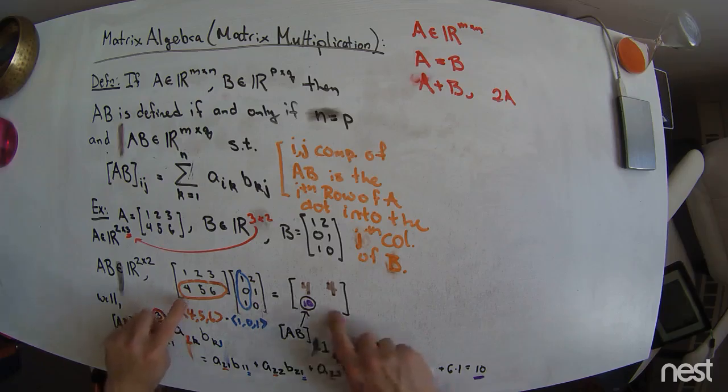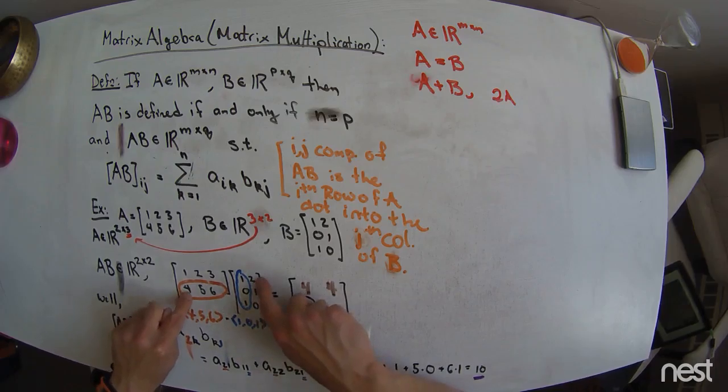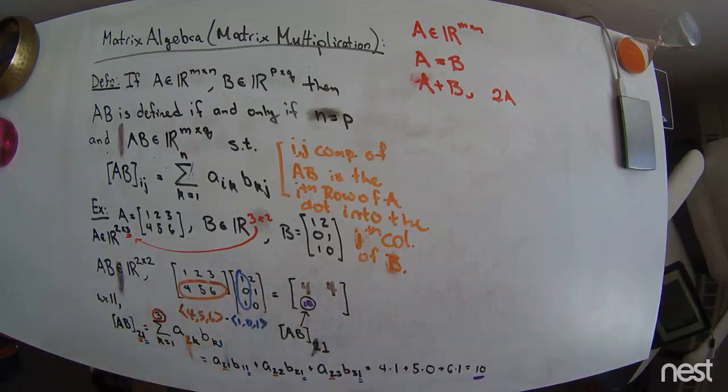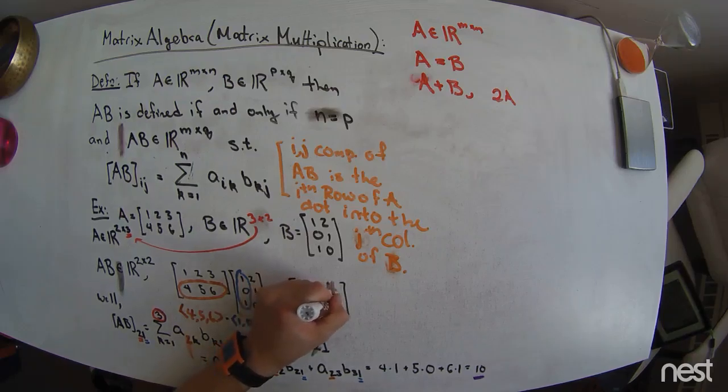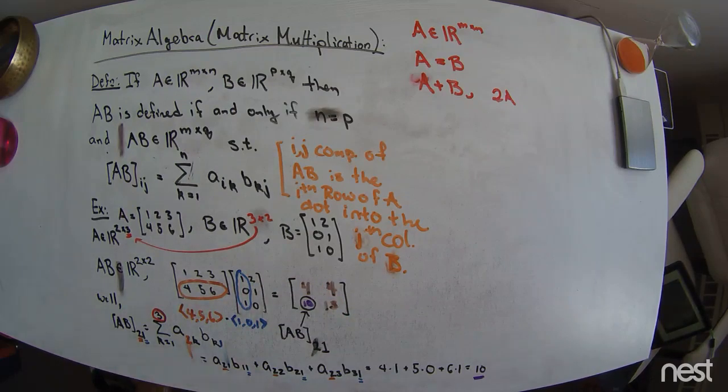And then this last one, the second row of A dotted into the second column, so that's an 8, plus a 5, which is a 13, plus a nothing, so that's a 13. Great. All right.